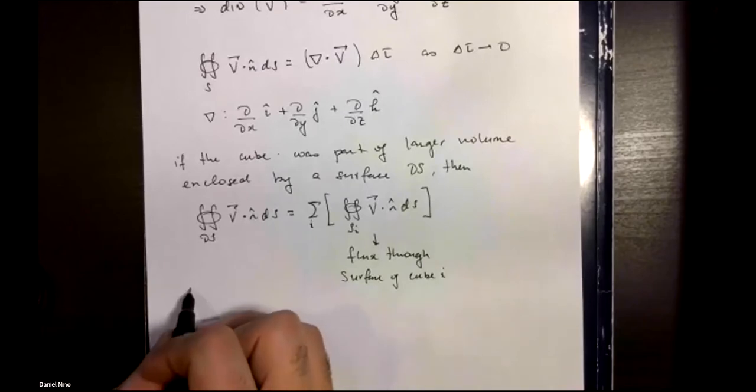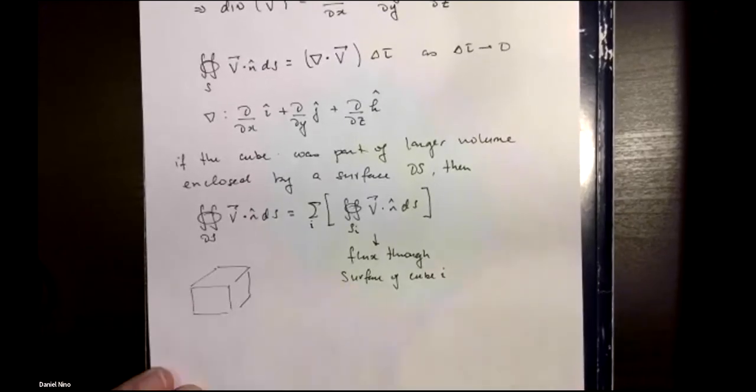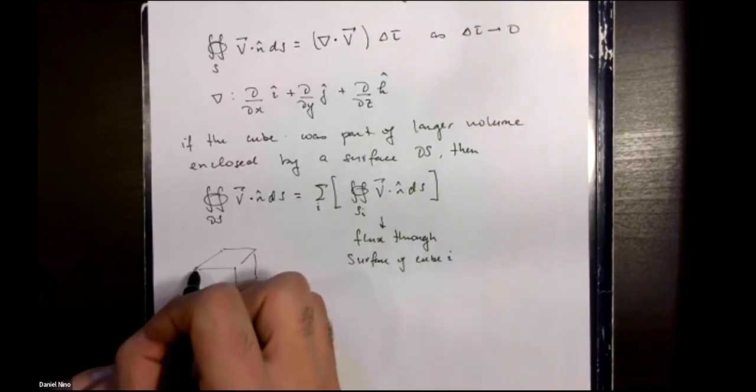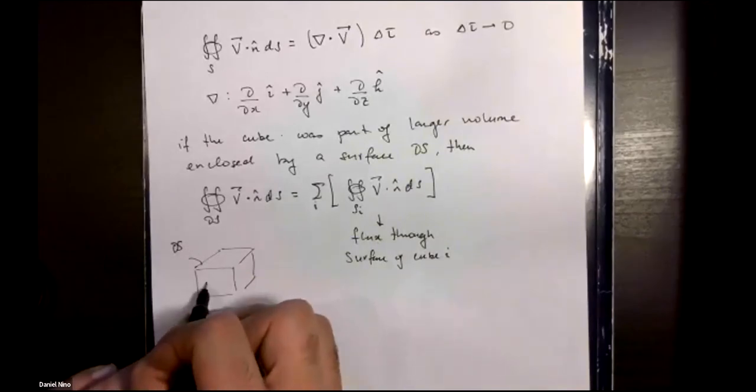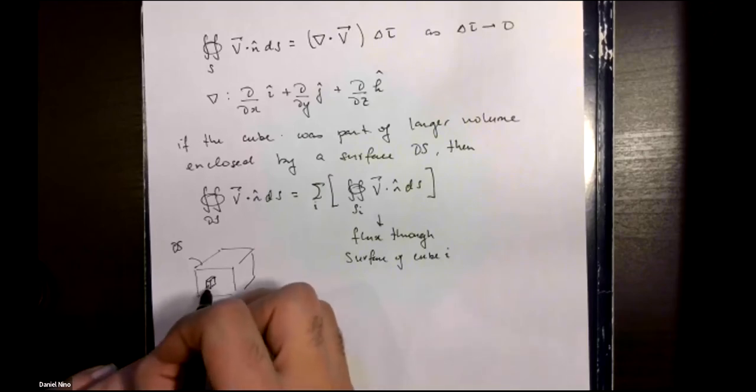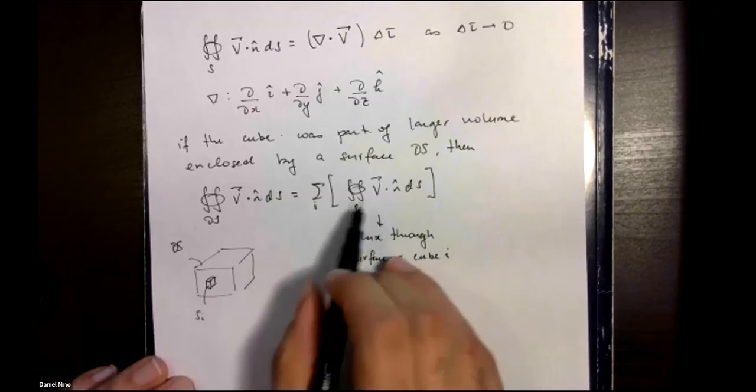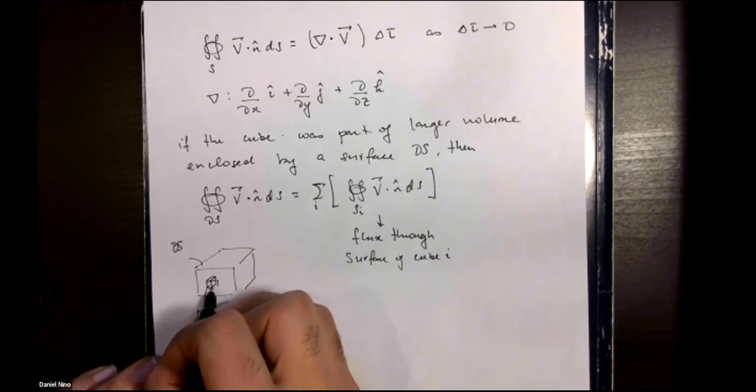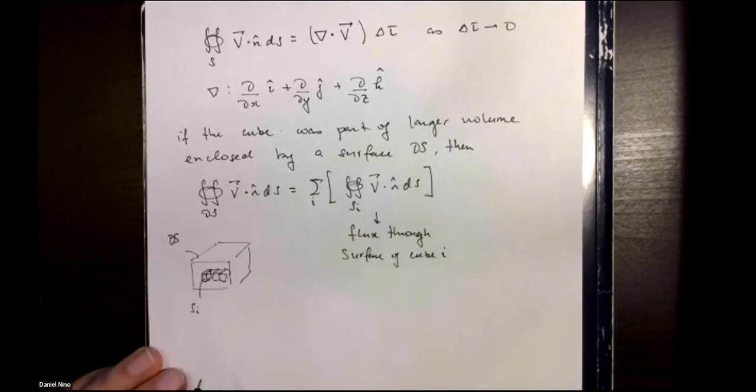Just as a visual representation, we have some large volume whose entire surface is del s. And we're building it up from tiny volumes. Each one has a surface enclosing that volume s i. Over here, we're just adding the contributions from a whole bunch of these little volumes, and we'll eventually make up the larger volume.